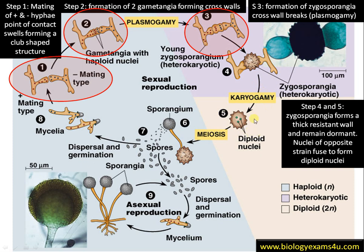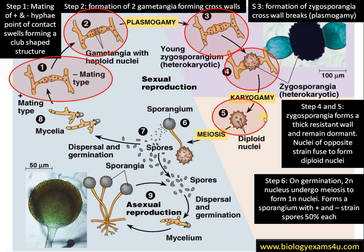Meanwhile, the nuclei of the opposite strains fuse to form diploid nuclei — karyogamy occurs. Step six: on germination of the zygospore, the diploid nuclei undergo meiosis forming haploid nuclei. The zygospore germinates by forming a sporangiophore, and the nuclei migrate to the tip forming a sporangium, which transforms into haploid spores.